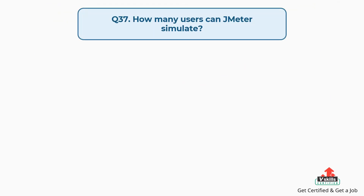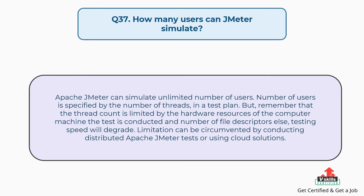Question 37: How many users can JMeter simulate? Apache JMeter can simulate an unlimited number of users, specified by the number of threads in a test plan. However, thread count is limited by the hardware resources of the computer and the number of file descriptors, otherwise testing speed will degrade. This limitation can be circumvented by using distributed JMeter testing or cloud solutions.